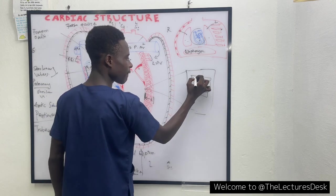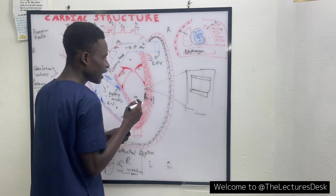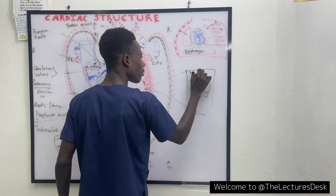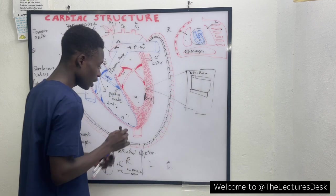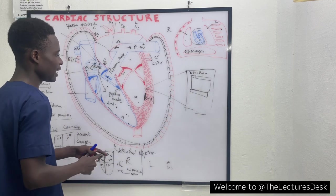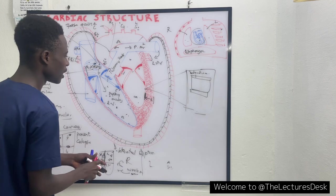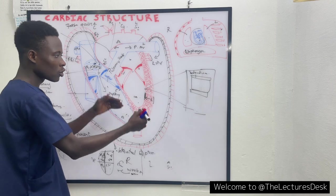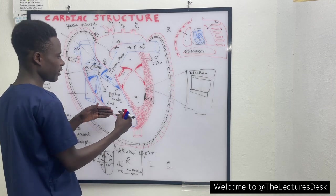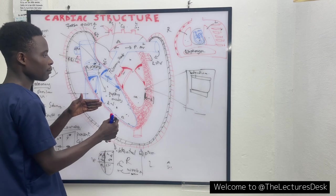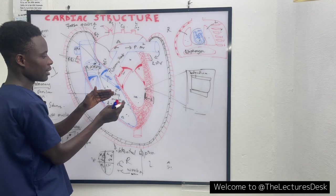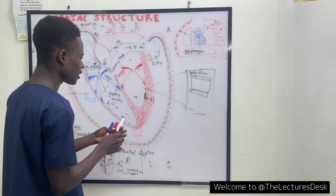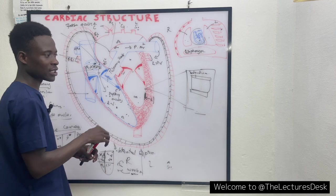Taking the wall of the heart, the first layer is the inner layer, called the endocardium. The endocardium is made up of smooth muscle and permits smooth flow of blood through the heart. It also reduces friction between the blood and the wall of the heart.